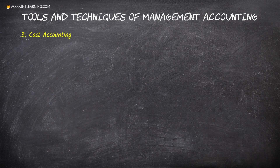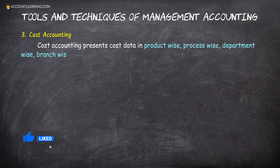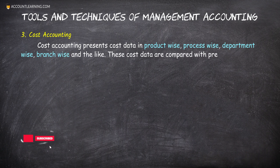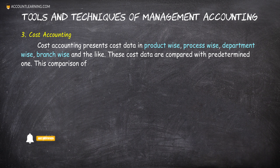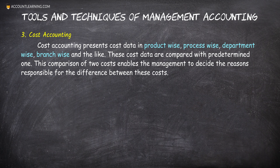3. Cost Accounting. Cost Accounting presents cost data in product-wise, process-wise, department-wise, branch-wise and the like. These cost data are compared with predetermined ones. This comparison of two costs enables the management to decide the reasons responsible for the difference between these costs.